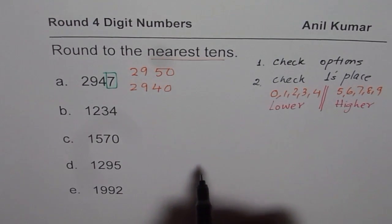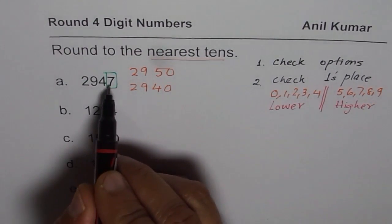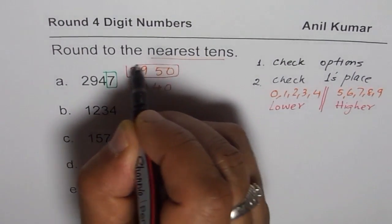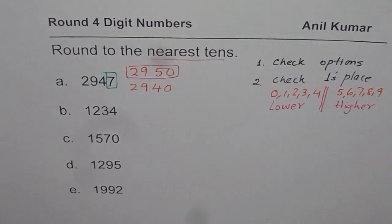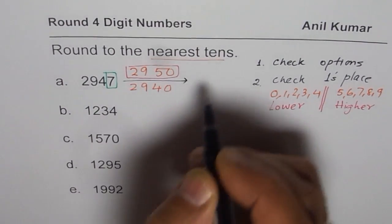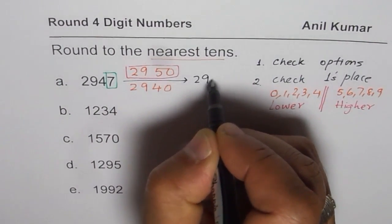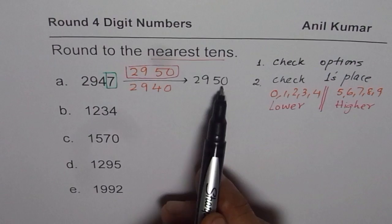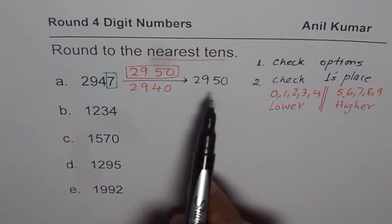Check ones place. So in our case, ones place is 7, 5 or more higher. So the higher option is 2,950. And therefore, we will round 2,947 to 2,950. That is the nearest ten to which 2947 should be rounded.